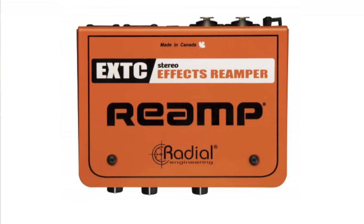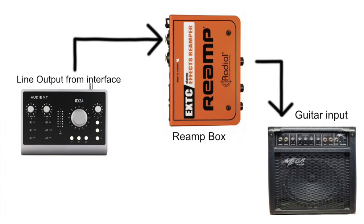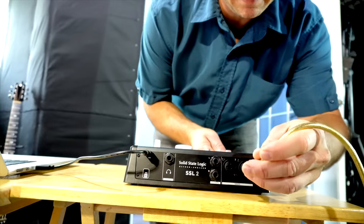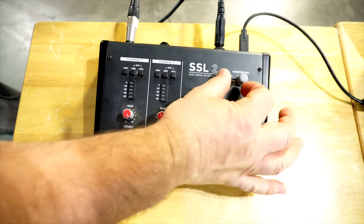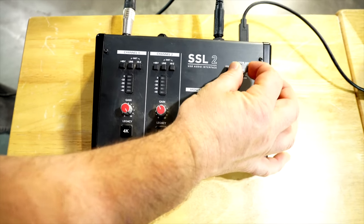For recording electric guitar DI, there are a couple of ways using a re-amp box. This converts a line level signal into a high impedance signal that mimics the output of a guitar. You can use the signal from a line output or even the direct monitoring headphone output and send that signal into a guitar amp. For instance, with the SSL2 plugged into input 1, use the direct monitoring headphone output to route just the guitar by setting the mix all the way to input. The signal coming out of the headphone output is stereo unbalanced.